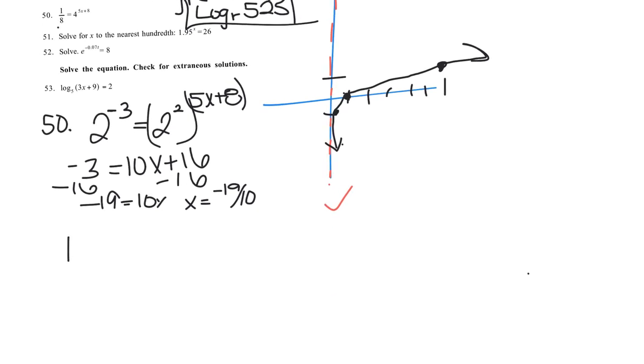Number 51, 1.95 to the X equals 26. There were several ways to solve this. I could log both sides, I could log base 1.95 both sides, or I could rewrite it as a log. When you rewrite it as a log, this is the base. This is our base. This is inside, and the X is what's on the other side. So it's kind of like this little L. Log base 1.95 of 26 equals X.